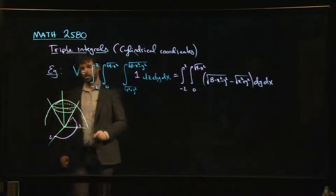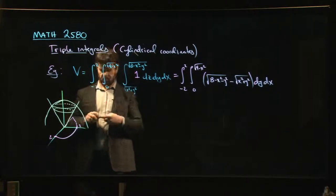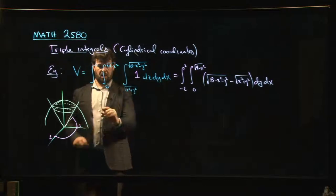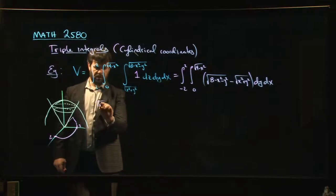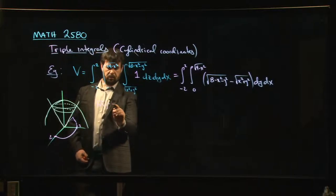And you can guess exactly what that circle is going to be because if we set x squared plus y squared equal to square root of 8 minus x squared minus y squared, square both sides.